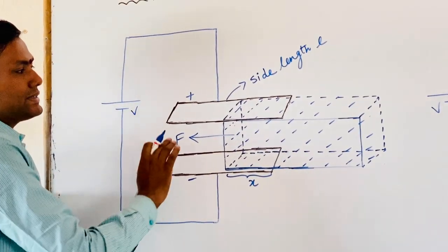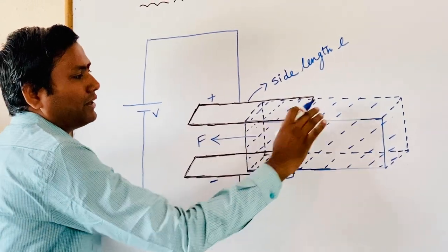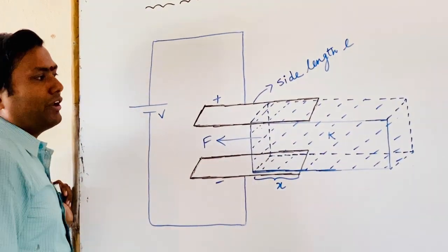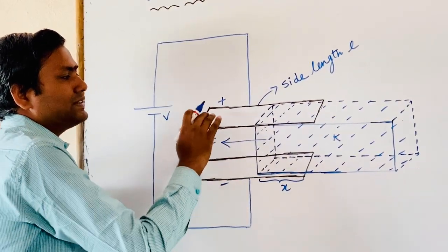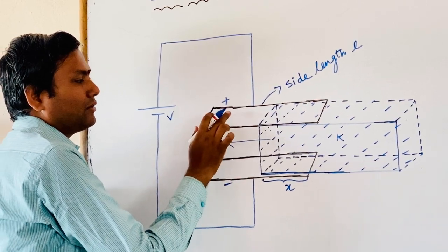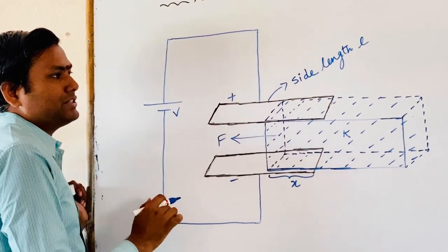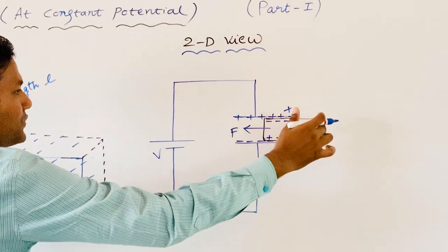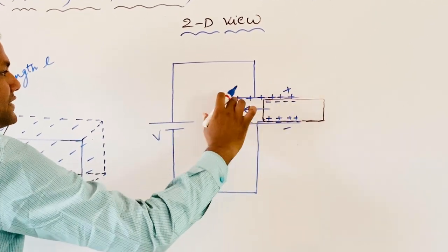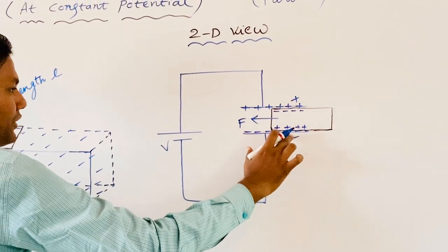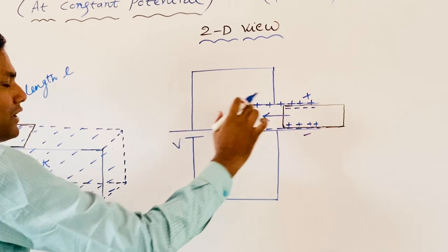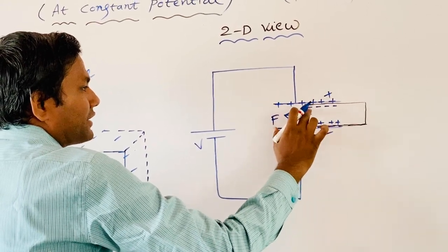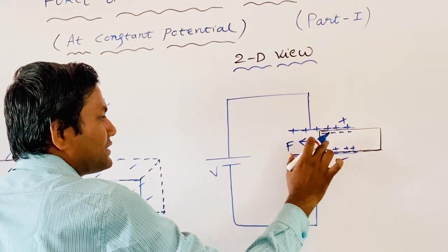After seeing this setup, assume we are inserting one dielectric slab having dielectric constant K. Whenever you are introducing this dielectric slab, what will happen? The charges you are seeing on the plates of the capacitor are free charges. Here I am showing you in 2D view. Whenever you introduce the dielectric slab, because of these free charges — here you are seeing positive free charges and here negative free charges — these free charges start to induce charges on the face of this dielectric. This positive free charge creates a negative induced charge, and this negative free charge creates a positive induced charge.